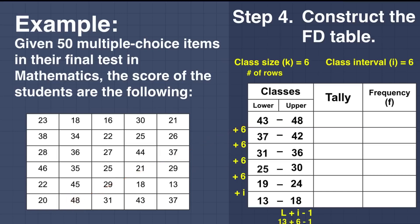Cross out 23 — it falls in 19 to 24, so count 1. Next is 38, which falls in 37 to 42, so count 1. Next is 28, included in 25 to 30, count 1. Then 46, included in 43 to 48, count 1. Then 22 and 20 are both included in 19 to 24. Then 18, included in 13 to 18. Then 34 and 36, both included in 31 to 36.